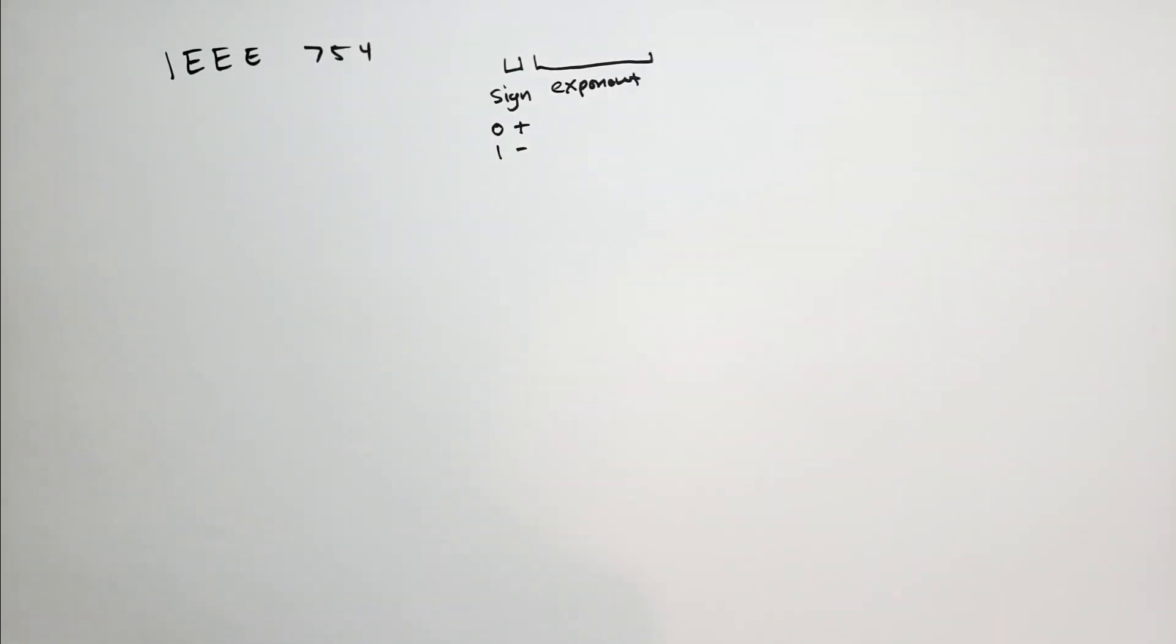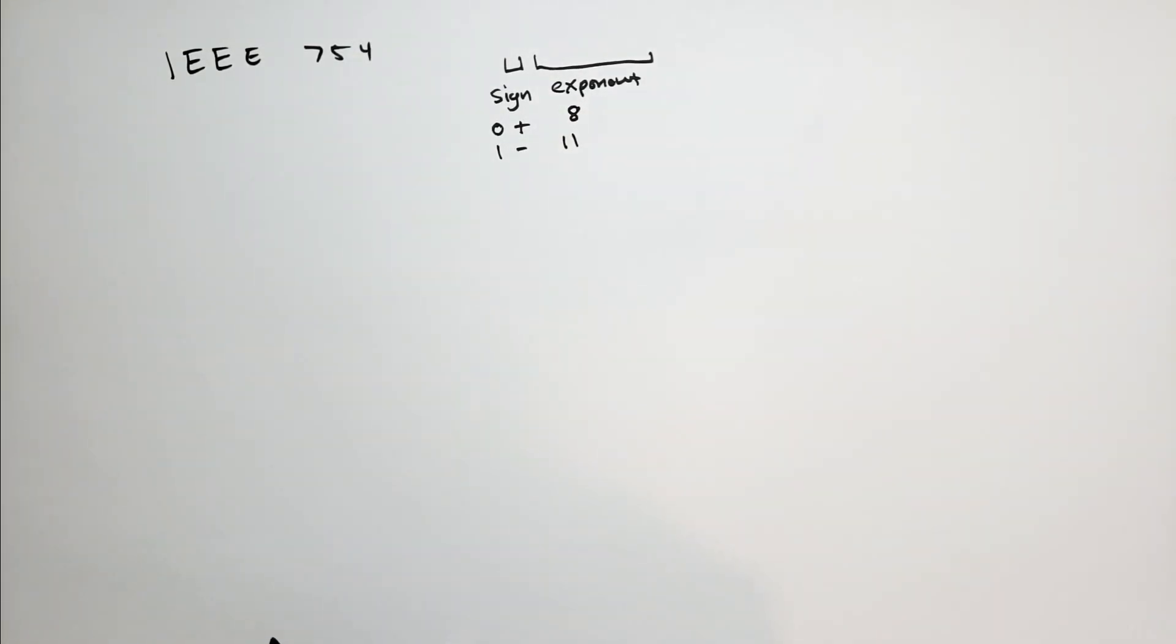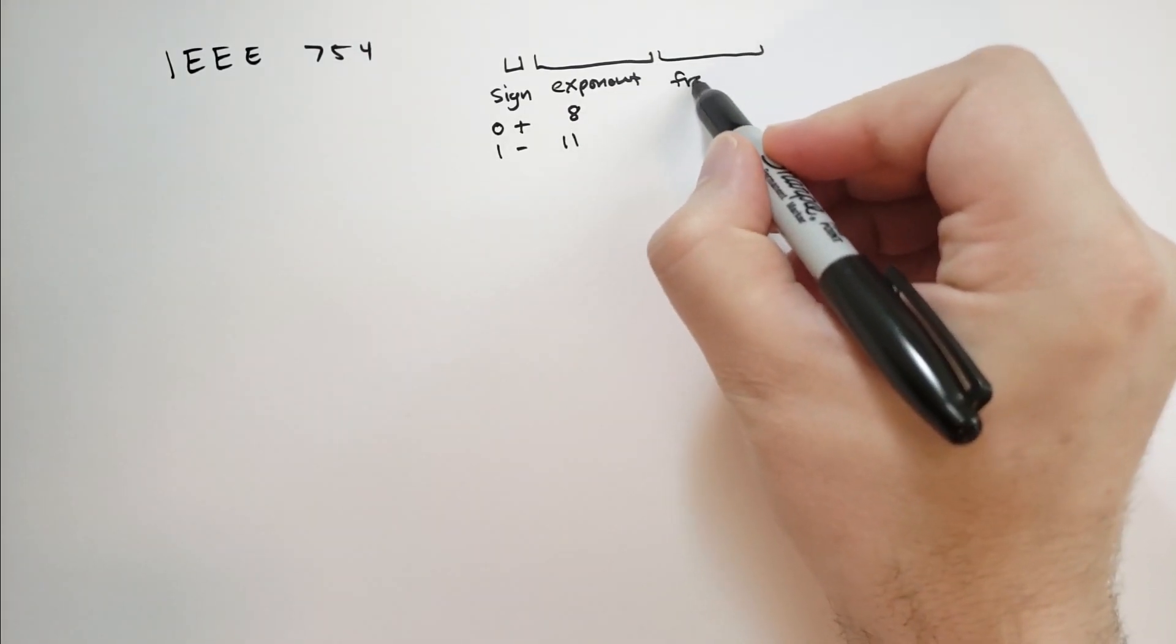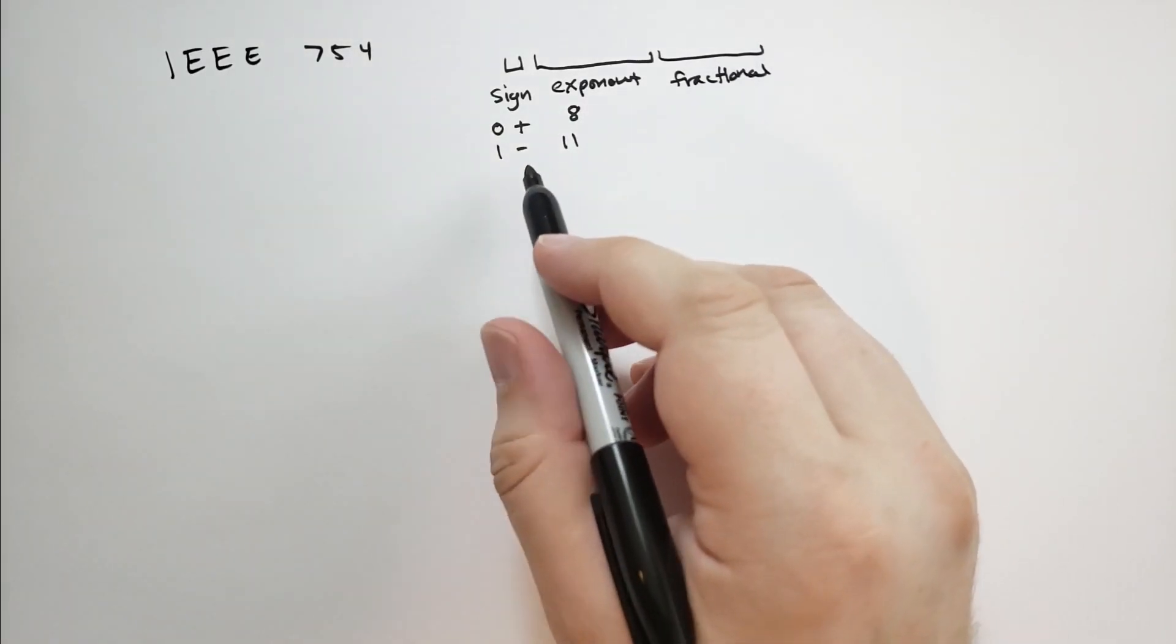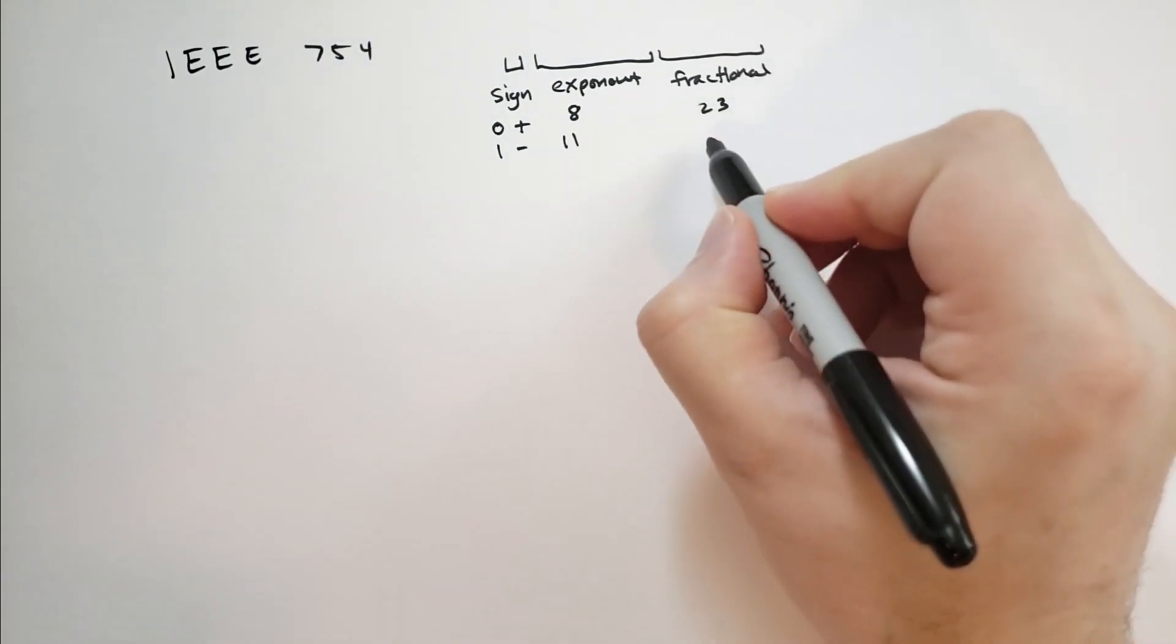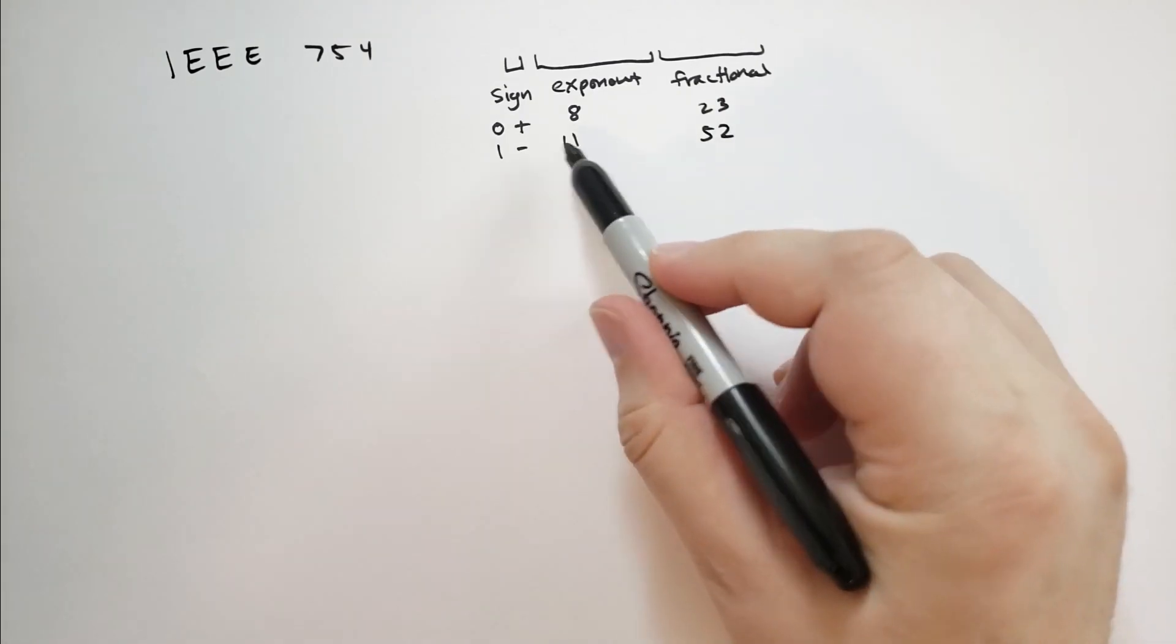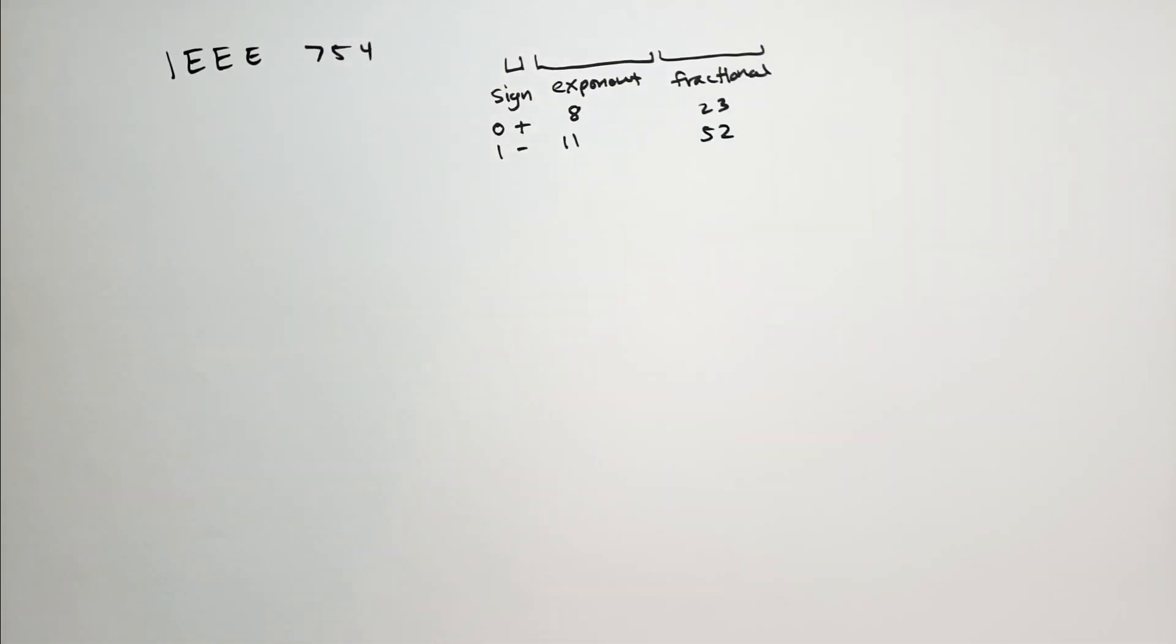And then you reserve a certain number of bits for the exponent part. And for single precision, which is for 32 bit machines, this is going to be eight bits or it'll be 11 bits for 64 bit precision, which is double precision. And then finally you have the fractional part, which is all the rest of the bits. So for 32 bits, that's going to be 23 more bits. And for 64 bits, that's going to be 52 more bits. So 52 plus 11 plus one should give you 64, 23 plus eight plus one should give you 32.